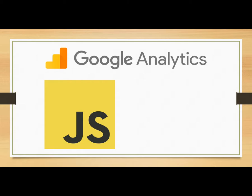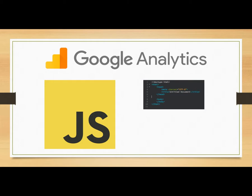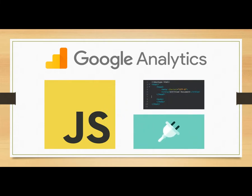Google Analytics links to your website through a code, most likely using JavaScript. You will get the code from Google Analytics and all you need to do is copy and paste the code inside the head tags in your HTML page. If you don't want to use the code, then you can use a plugin to link your site.